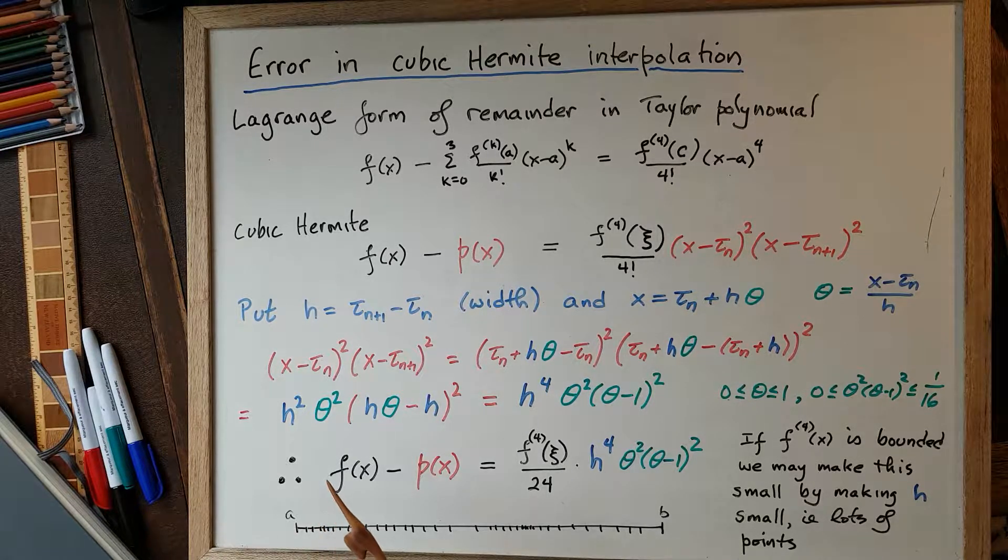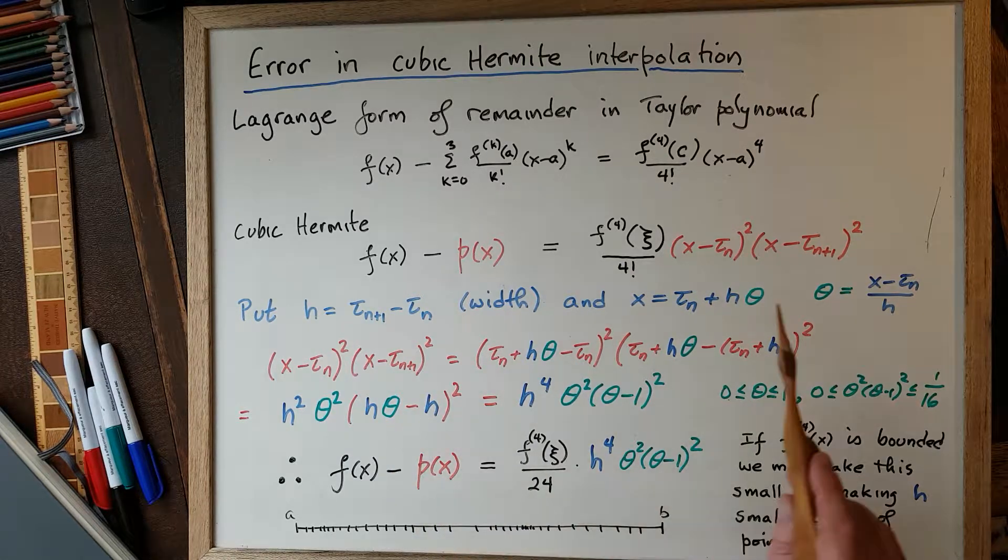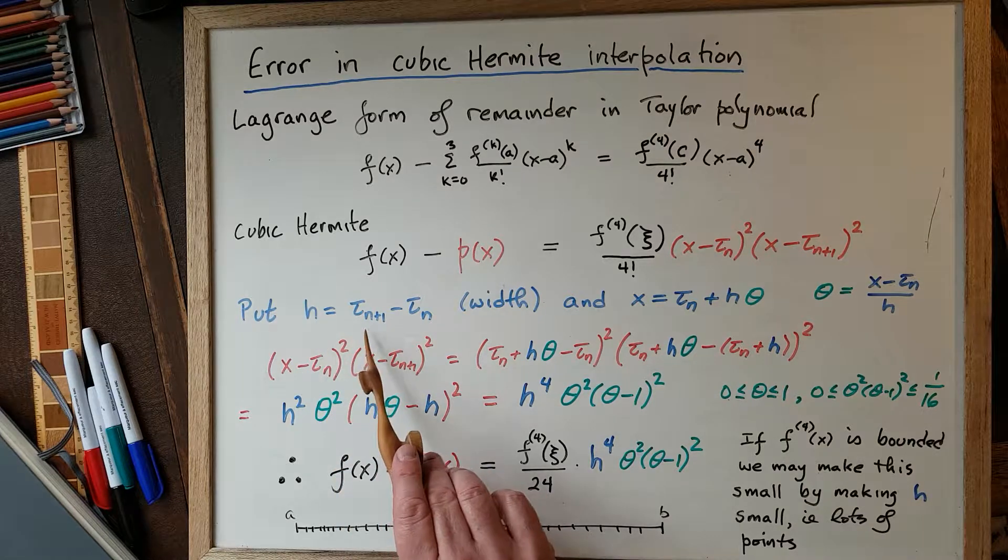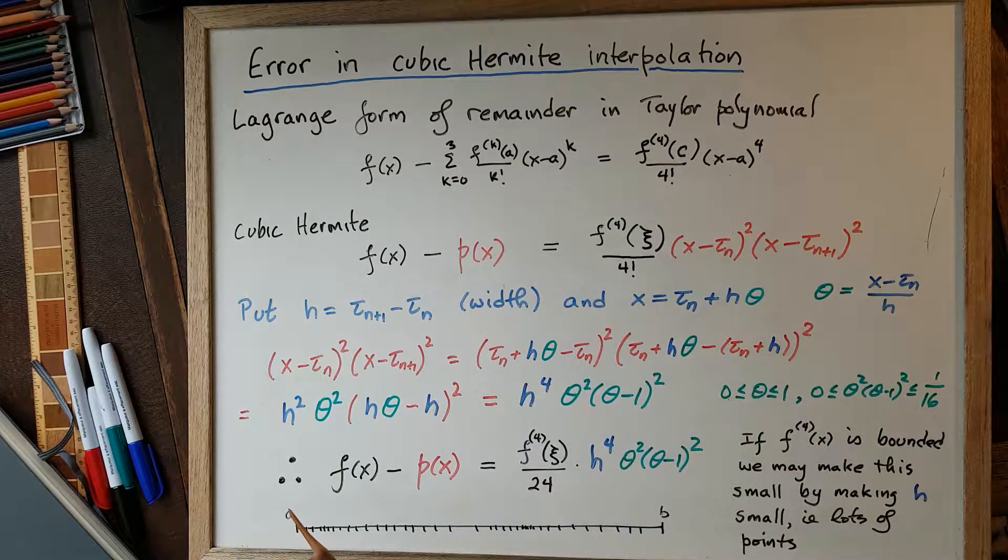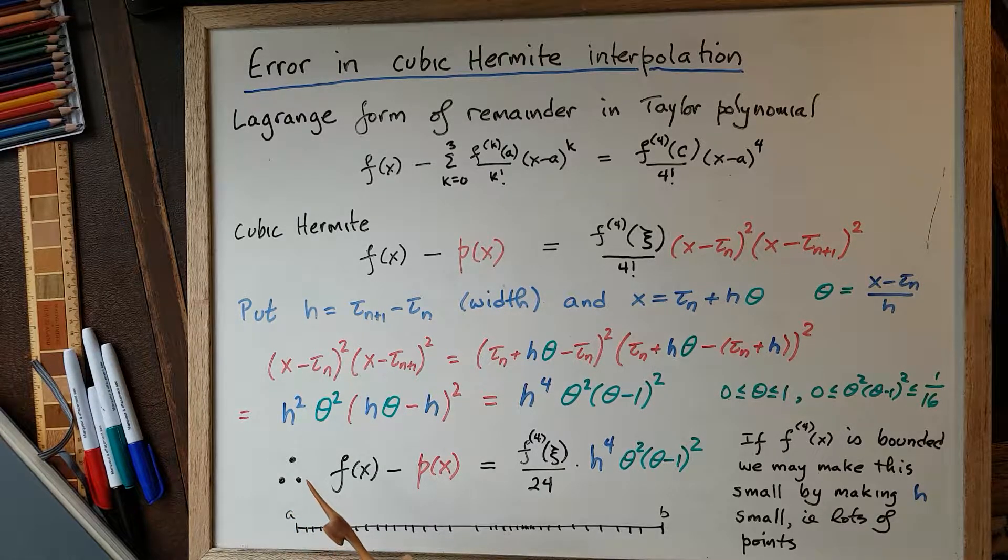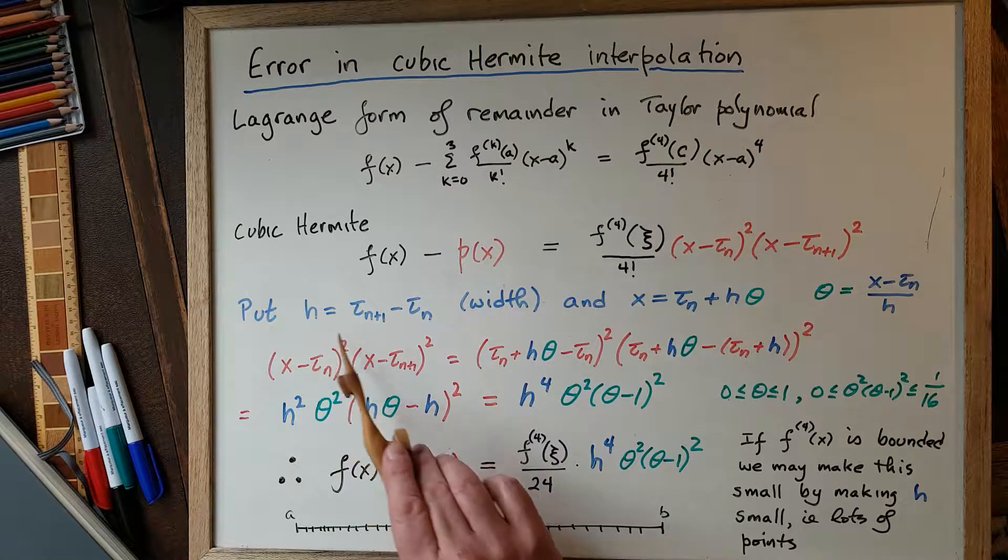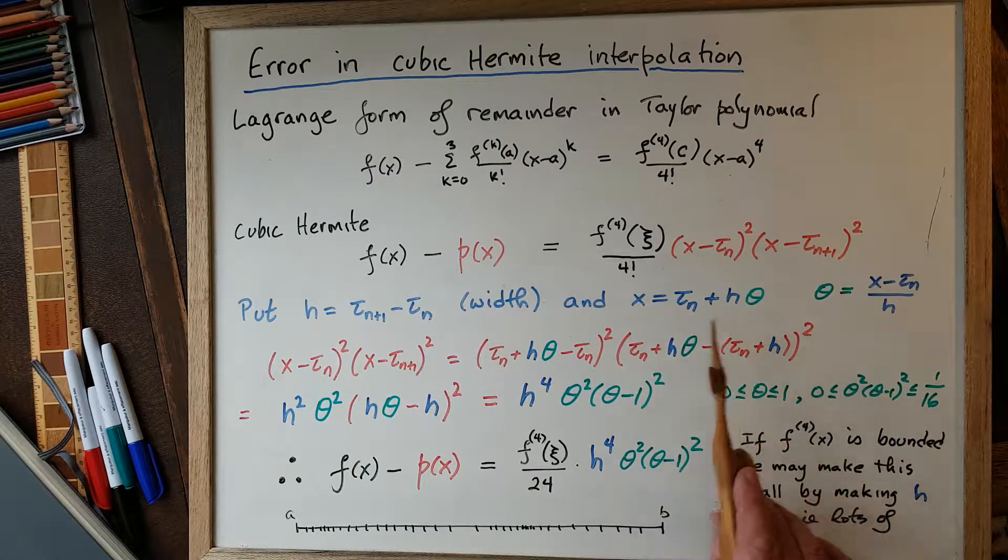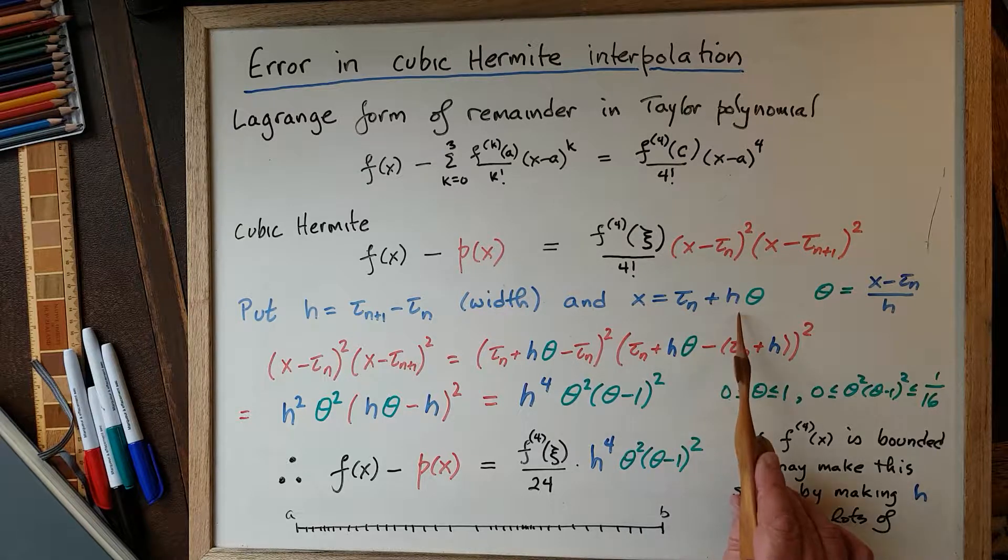So I want to put this in the context of what we were using before, the theta variable, and put this in the context of the width of the interval, the difference between τ_{n+1} and τ_n. This is a formula that's valid specifically for real interpolants, by the way. It's a different formula that works over the complex plane. So let's just put h = τ_{n+1} - τ_n and define a new variable theta exactly as we did in the previous videos by x = τ_n + hθ.